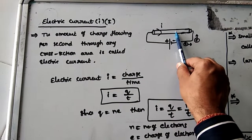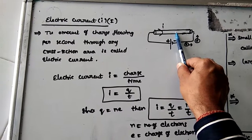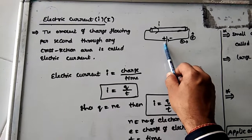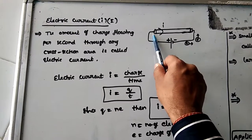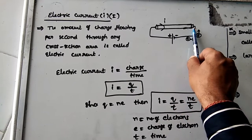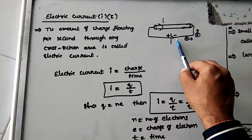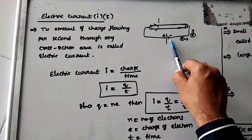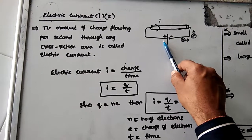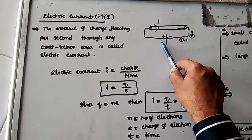This is a conductor — a conductor is one which will pass current through it. A battery or cell is connected, which maintains a potential difference. One end is connected to positive potential, which is high potential, and the other end is negative potential, which is low potential. At the negative end, there are more electrons, and at the positive end, there are fewer electrons.